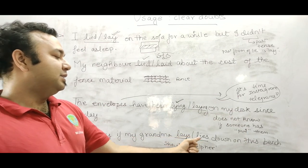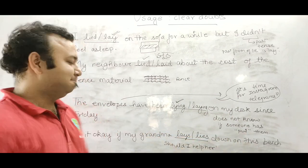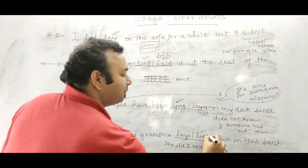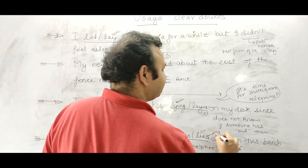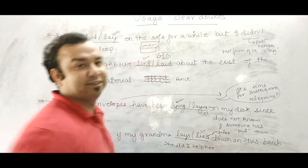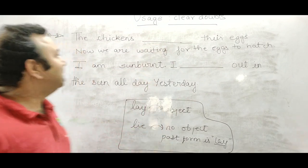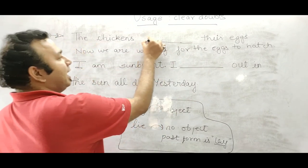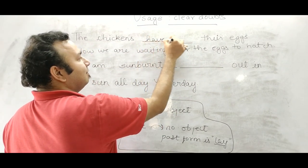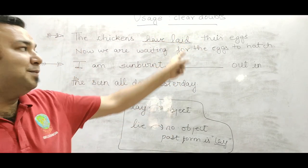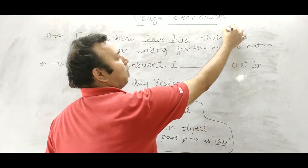Is it okay if my grandma lies or lays down on this bench? So, lies is used here because singular. The chickens have laid eggs. Laid will come because there's an object.